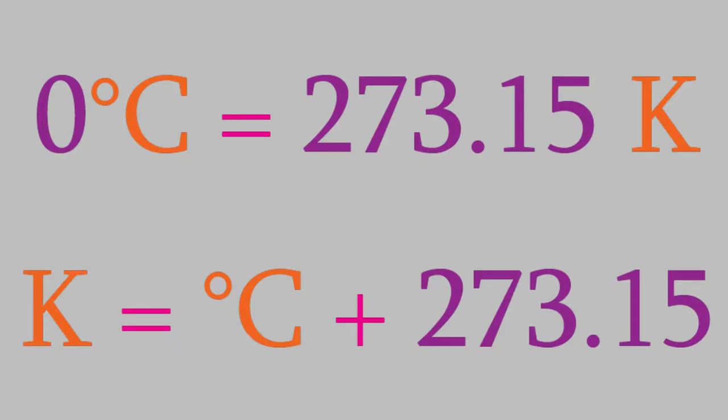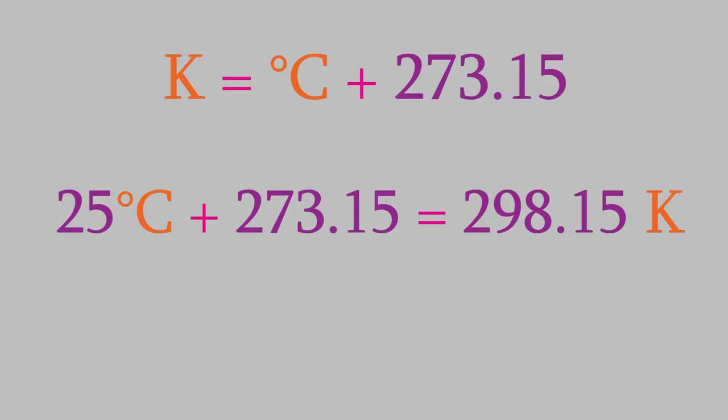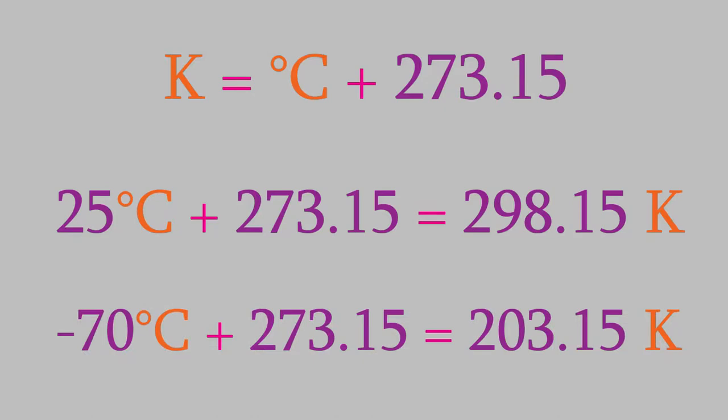So, for example, 25 degrees Celsius would just be 298.15 Kelvin, and negative 70 degrees Celsius would be 203.15 Kelvin.